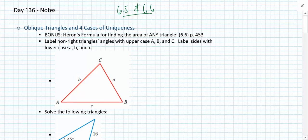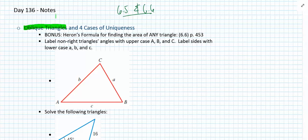In the past we worked to solve right triangles — that is, we found all missing sides and missing angles of right triangles. This week we're going to work with what are known as oblique triangles. In other words, these are triangles that are not right triangles. Anything that's not a right triangle can be called an oblique triangle.